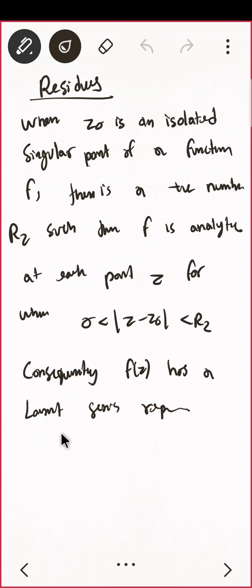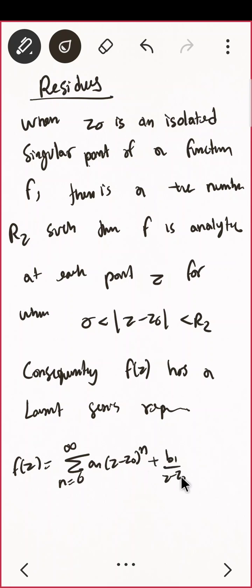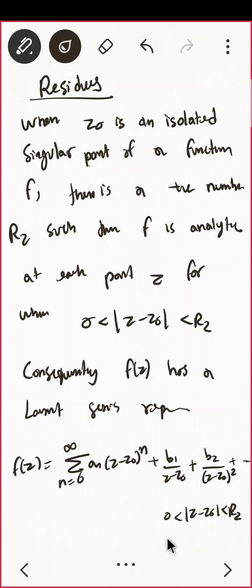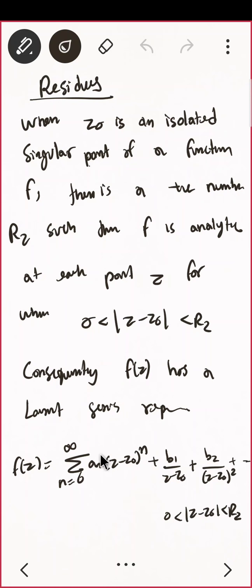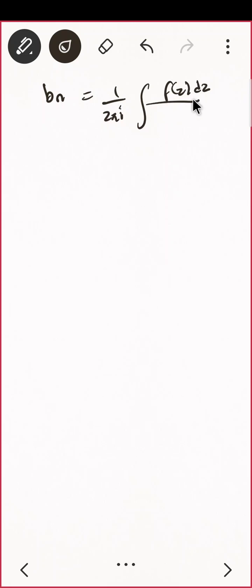Around a singularity you can find a Laurent series expansion: f(z) = Σ(n=0 to ∞) aₙ(z − z₀)ⁿ + b₁/(z − z₀) + b₂/(z − z₀)² + ⋯, valid for 0 < |z − z₀| < R₂. You already know what aₙ and bₙ are. For me, the real focus is on the bₙ coefficients, particularly b₁.